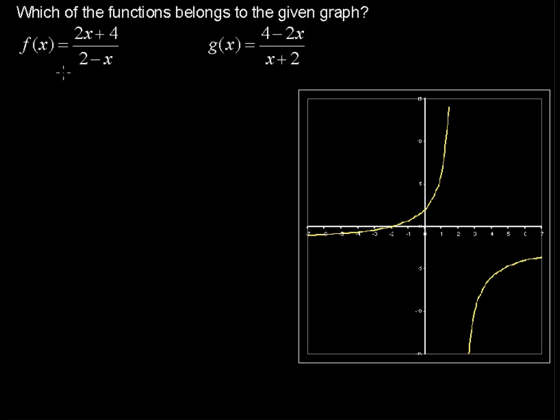Which of the functions belongs to the given graph? We have these two functions, two rational functions: f of x equals 2x plus 4 over 2 minus x, and g of x equals 4 minus 2x over x plus 2.